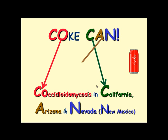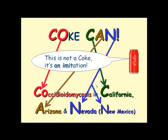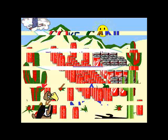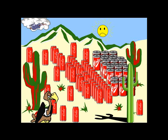The Coke can is our mnemonic for Coccidioides immitis — California, Arizona, Nevada, and New Mexico. You may object that the image shown is an imitation of Coke, but that's exactly why we call it Coccidioides immitis — it's a Coke imitation. For visual learners, imagine the surface of Sedona carpeted with Coke cans so you never forget where Coccidioides is found.